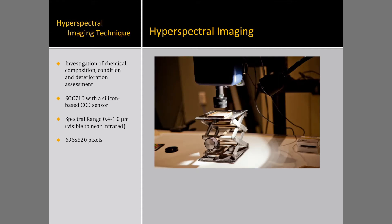Hyperspectral imaging is a non-destructive imaging technique originally developed for applications in remote sensing and astronomy that has found uses in cultural heritage imaging, aiding in the investigation of chemical composition, condition and deterioration assessment, and change due to environmental conditions. Hyperspectral imaging provides multiple images at varying wavelengths, creating a three-dimensional data cube with the set of images covering a range of the electromagnetic spectrum. This technique is a non-invasive method of chemical characterization, providing visible and non-visible information through narrow band segmentation, in which the data cube can provide unique three-dimensional spectral curves for material identification.